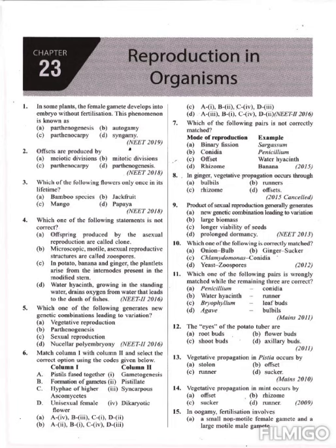The next question: which one of the following statements is not correct? Offspring produced by asexual reproduction are clones — that is a correct statement. They are just a photocopy of their parents. Microscopic motile asexual reproductive structures such as zoospores are also a correct statement, as zoospores are microscopic and are asexual reproductive structures.